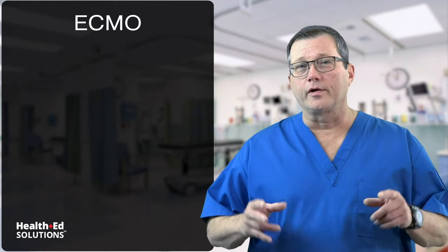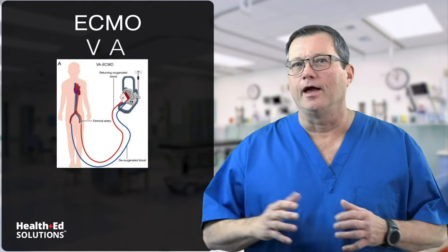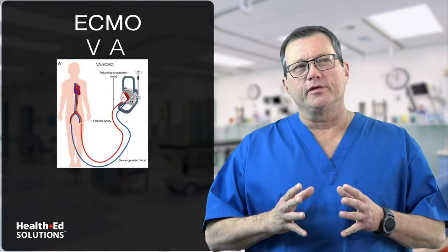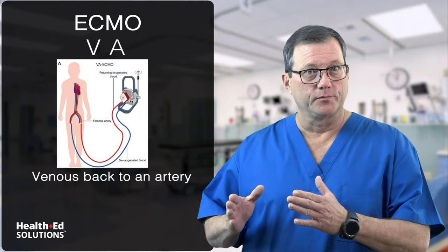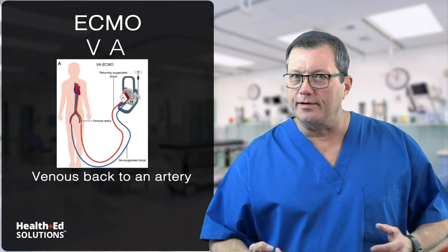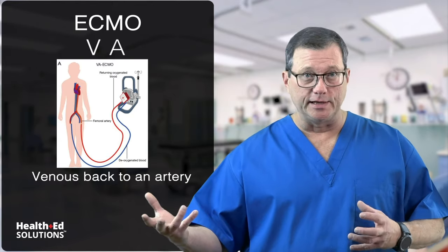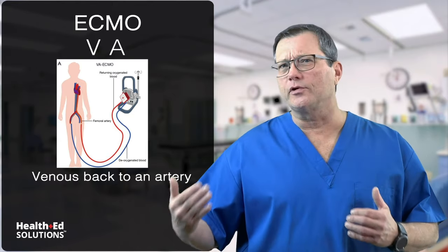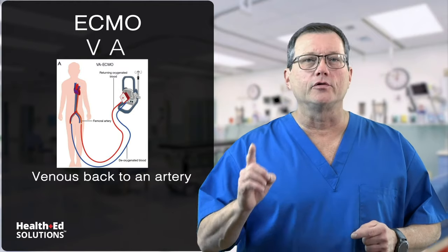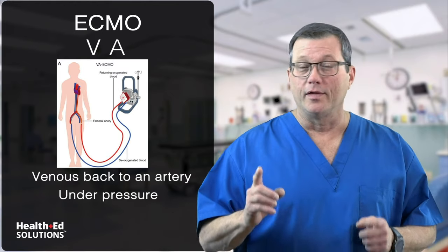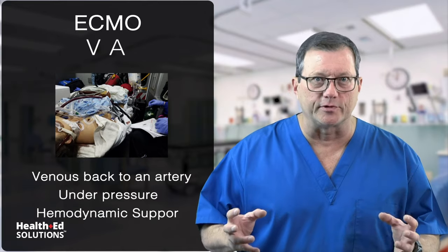The second type of ECMO is VA ECMO. In this case we're going from venous back to an artery — so we're taking blood from a vein, sending it to the machine, getting it oxygenated and cleaned, then returning it to a patient's artery under pressure, thus providing the patient with some hemodynamic support.